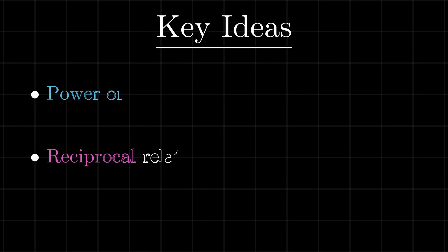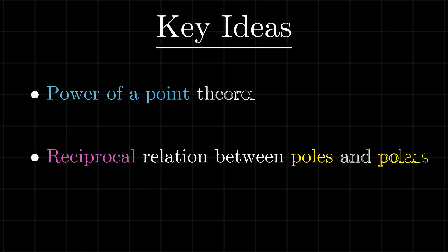Two ideas play a key role in understanding Gigan's solution. One is the power of a point theorem, and the associated idea of constructing equal tangents from a given point to three given circles. The second idea is a reciprocal relation between poles and polar lines with respect to a circle.